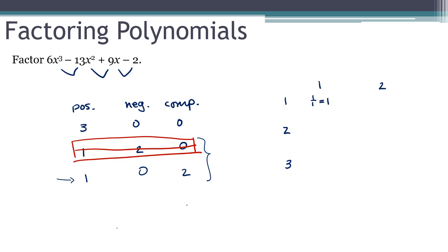1 divided by 1 is 1. 2 divided by 1 is 2. 1 divided by 2 is one-half. Here we get one-third. 2 divided by 2 is 1, but that's a duplicate, so we cross it off. And then we have 2 divided by 3. So these are our only possibilities — 5 numbers — and I'm going to apply the remainder theorem, plugging each one in to see what happens.